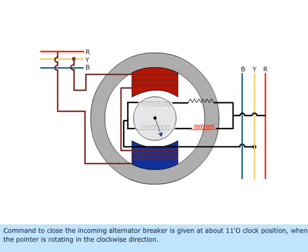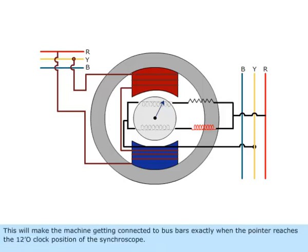The command to close the incoming alternator breaker is given at about 1 o'clock position when the pointer is rotating in the anticlockwise direction. This will make the machine getting connected to busbars exactly when the pointer reaches the 12 o'clock position of the synchroscope.